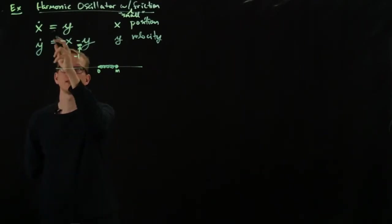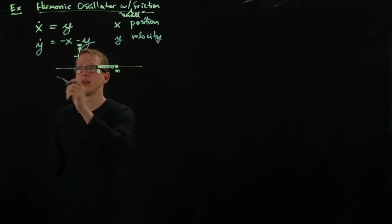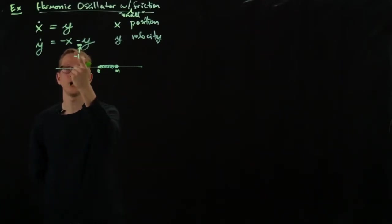And let's check to make sure that at least this makes sense. The derivative of x is y. So that makes sense. That's the velocity. And the derivative of the velocity is proportional to the force pulling me back towards the origin. There is a force given by the actual spring that appears in this.